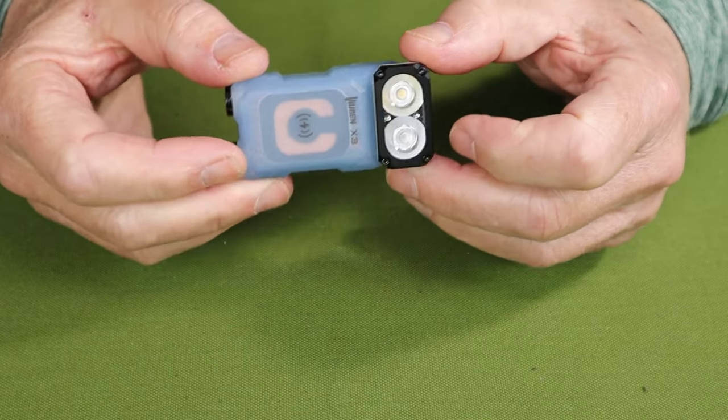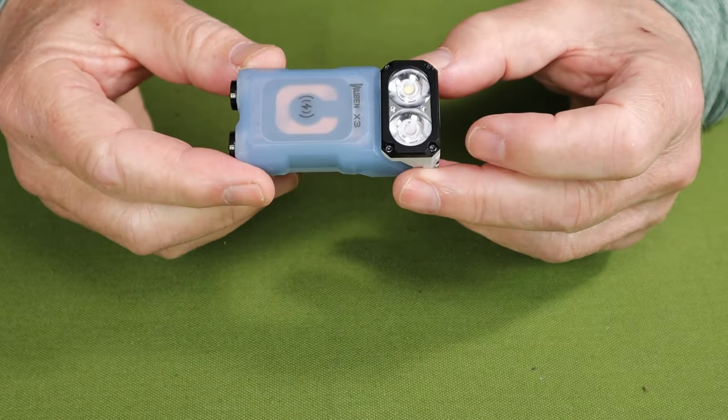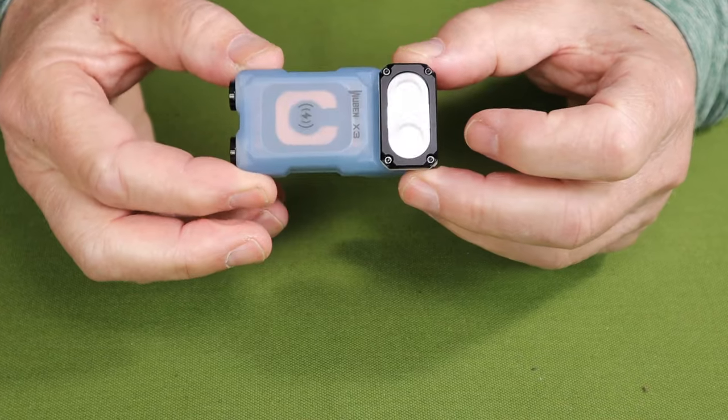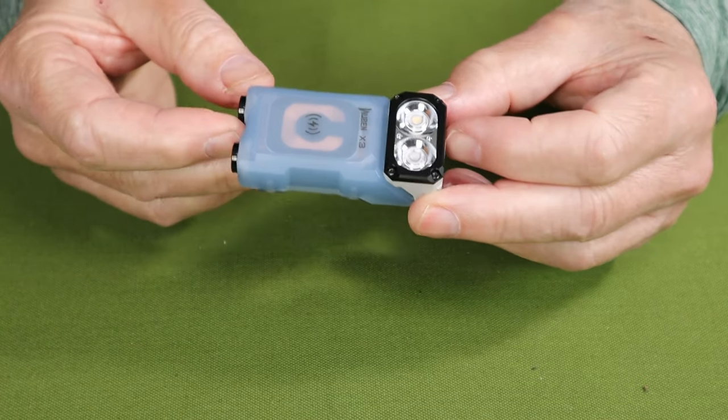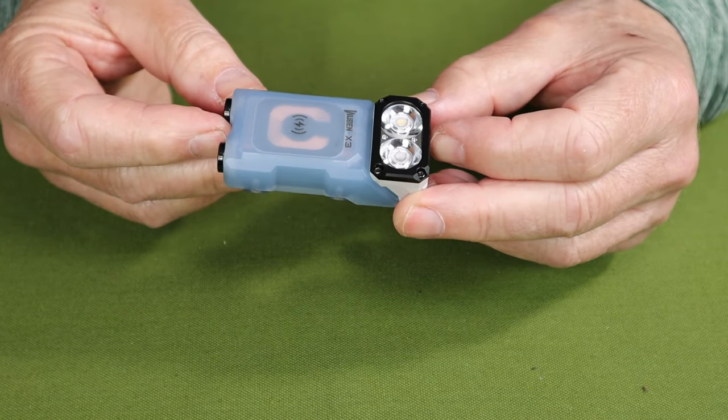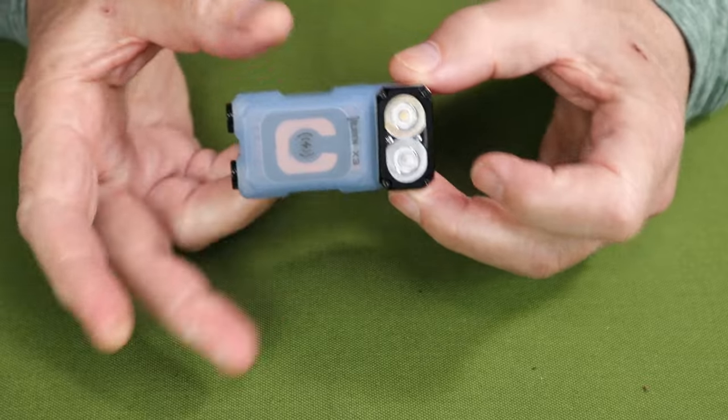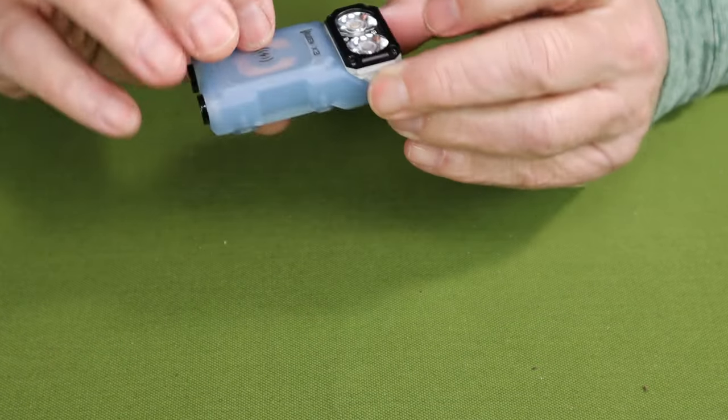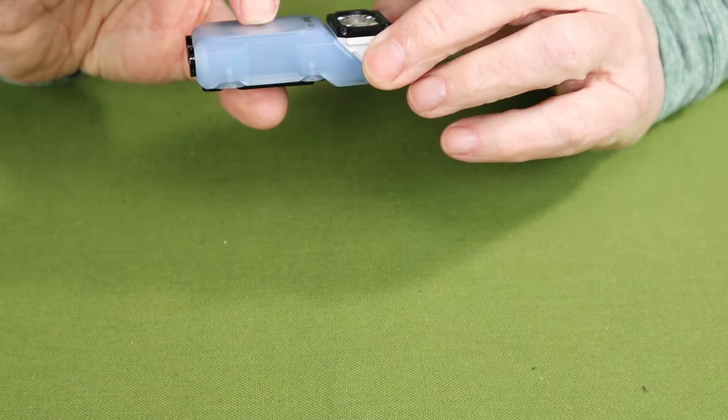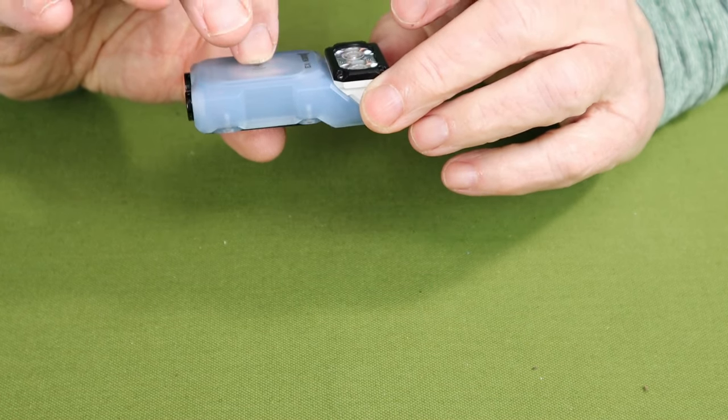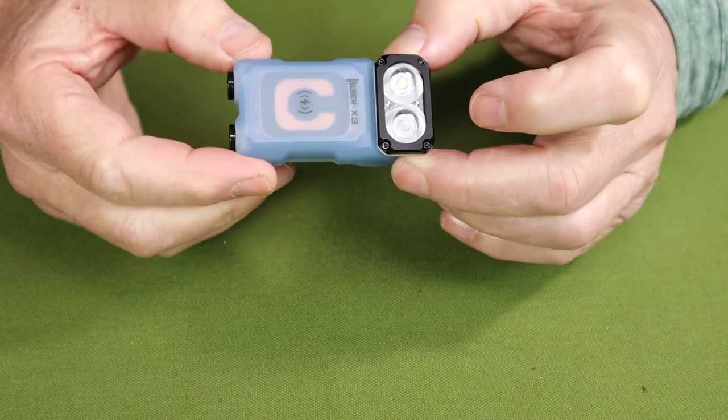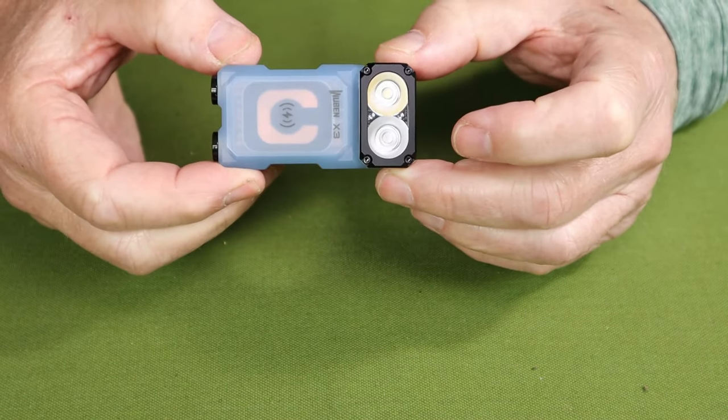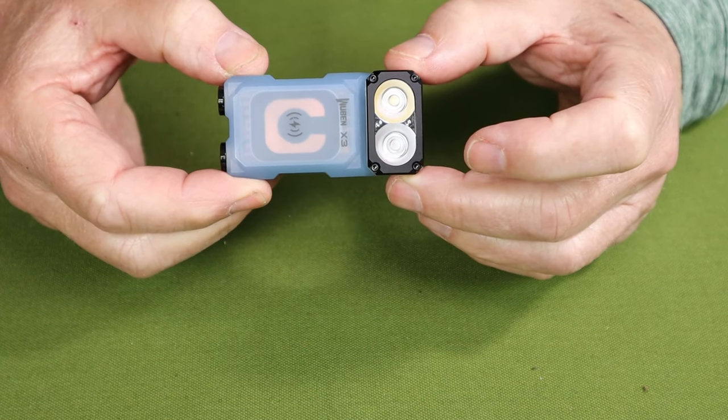Moving on to the physical specifications for this light. All-important weight, 2.29 ounces, or 65 grams. Length, 2.76 inches, or 70 millimeters. Width is 1.38, or 35 millimeters. And height, or thickness, is 0.83 inches, or 21 millimeters. It is IP65 waterproof rating, and has an impact rating of 1 meter.